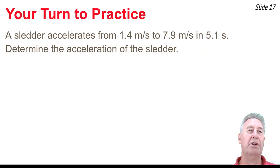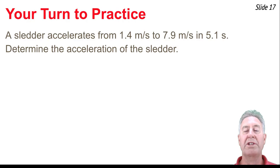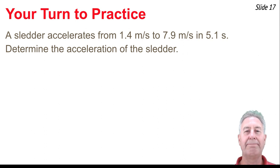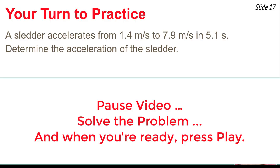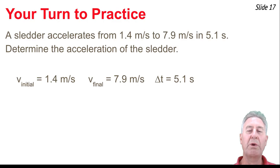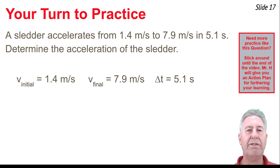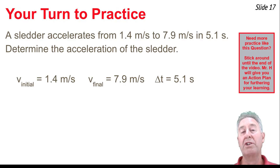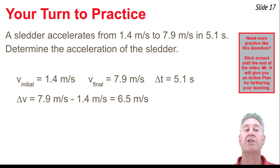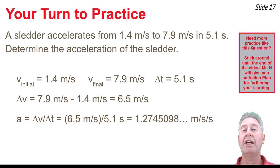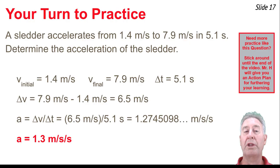Now it's your turn. A slider accelerates from 1.4 meters per second to 7.9 meters per second in 5.1 seconds. To solve it, write down v-initial, v-final, and delta t. Calculate the velocity change by subtracting initial from final. Then divide by time change. The result is approximately 1.3 meters per second squared.